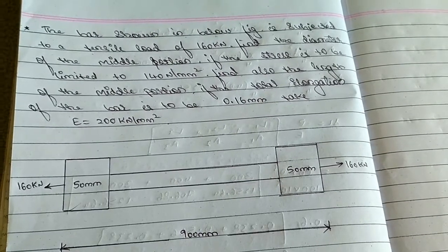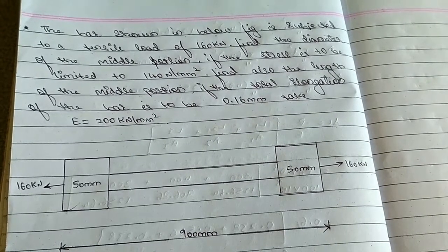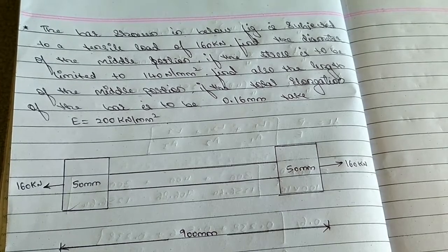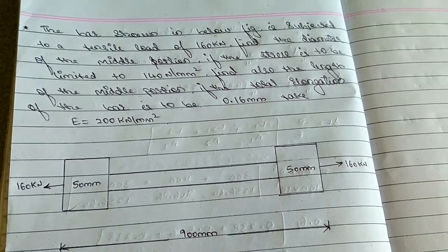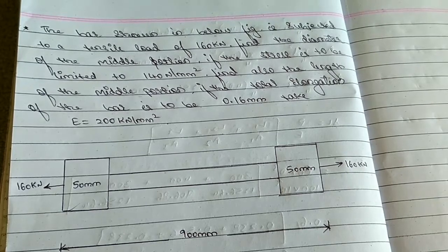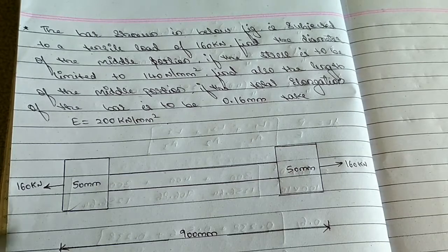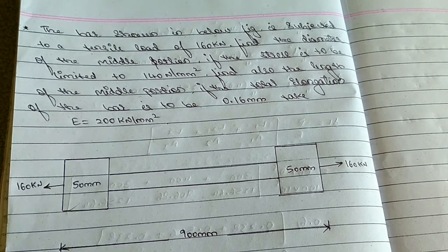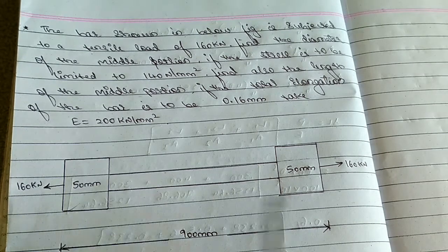Hello everyone. Let us solve another different type of problem on stresses in varying bars, or you can say it as the principle of superposition. In the last problem, we found out the elongation, but here we have been given the total length and we have to find out the length of each bar.